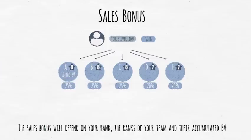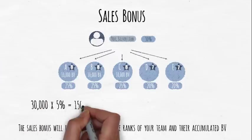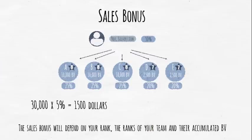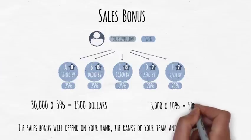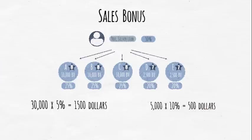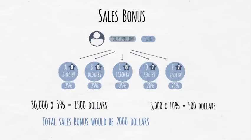A, B, and C each have 10,000 BV, so we can calculate the sales bonus by multiplying their BV total by 5%, your percentage minus theirs. 30,000 times 5% equals $1,500. D and E each have 2,500 BV, so we can calculate the sales bonus by multiplying their BV total by 10%, your percentage minus theirs. 5,000 times 10% equals $500. That means your total sales bonus would be $2,000. This would be paid monthly.